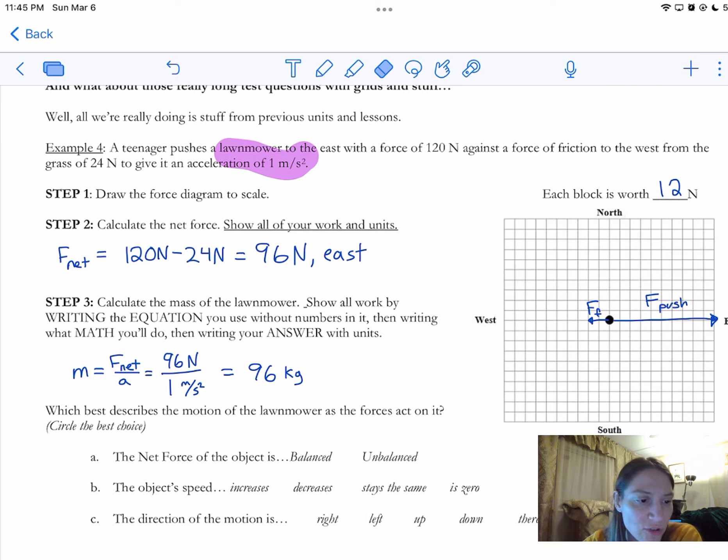Last but not least, I've got some questions that I have to answer about it. Which describes the motion of the lawnmower as the forces act on it? So the net force, is it balanced or unbalanced? It's unbalanced because one of the forces is bigger than the other. That means that the object's speed is probably going to be increasing. I'd have to think about the directions if I wasn't really sure about that. This object is accelerating in the direction that the kid is pushing. It's definitely going to be going faster.